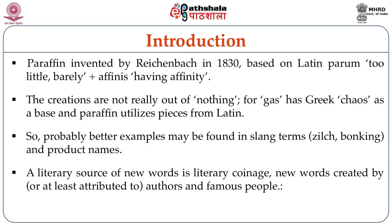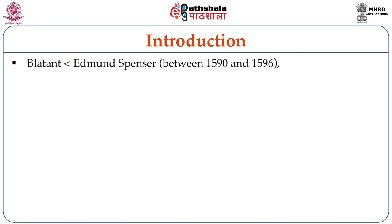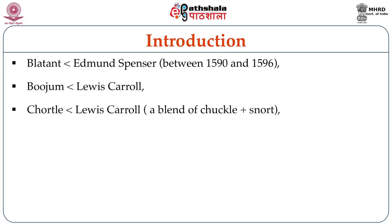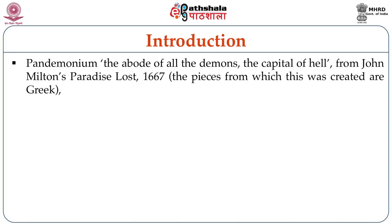A literary source of new words is literary coinage — new words created by, or at least attributed to, authors and famous people. 'Blatant' is supposed to have been created by Edmund Spenser between 1590 and 1596. 'Bojum' by Lewis Carroll. 'Chortle' by Lewis Carroll — a blend of 'chuckle' and 'snort'. 'Pandemonium', the abode of all the demons and the capital of hell, comes from John Milton's Paradise Lost, 1667; the pieces from which it was created are Greek.